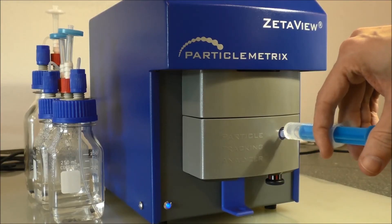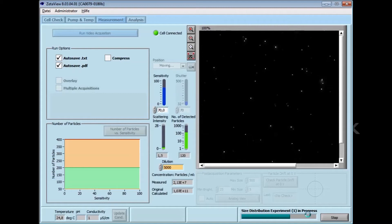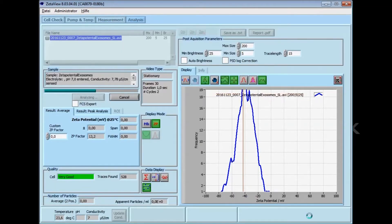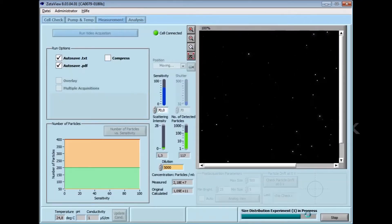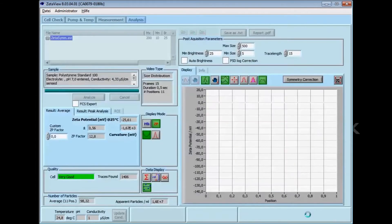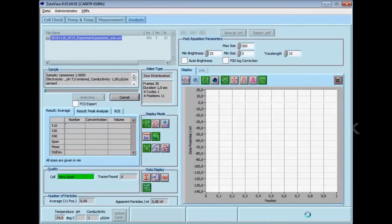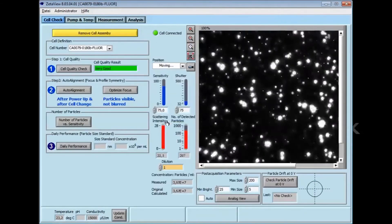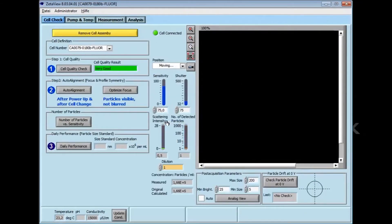The ZetaView is a next-generation nanoparticle tracking analyzer that measures hydrodynamic particle size, zeta potential, and concentration through the analysis of a video sequence at 11 separate positions in the flow cell. Each individual particle in the three nanoliter field of view is counted and tracked in short video clips, creating accurate concentration calculations and particle size distributions. The ZetaView combines these Brownian motion measurements with classical microelectrophoresis to determine zeta potential.